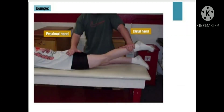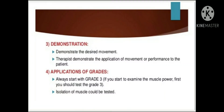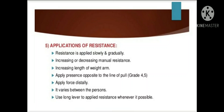In the picture, you can see that the proximal hand of the therapist is used to provide stabilization to the proximal joint, and the distal hand provides assistance or resistance. Before checking MMT, the therapist must clearly demonstrate the desired movement to the patient — for example, demonstrating elbow flexion when testing the biceps. Resistance is applied slowly and gradually, usually by manual resistance. If resistance is applied throughout the range of motion, it is called a make test; if applied at end range, it is called a break test.